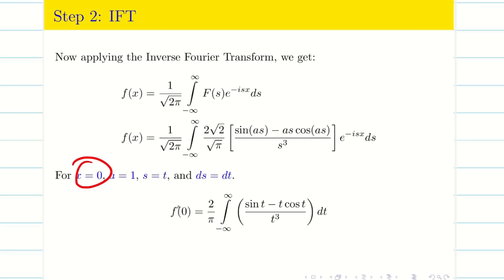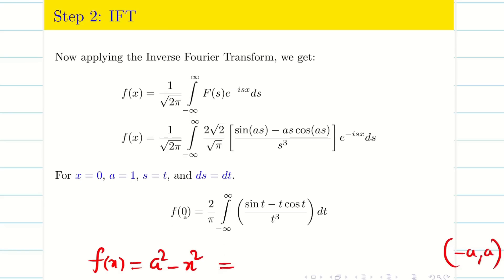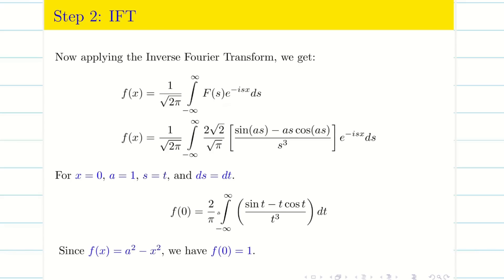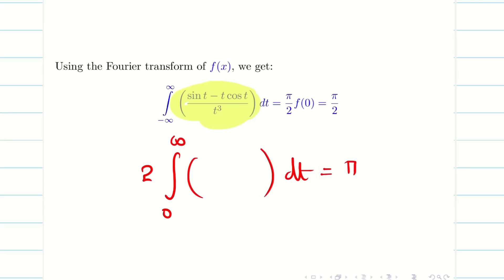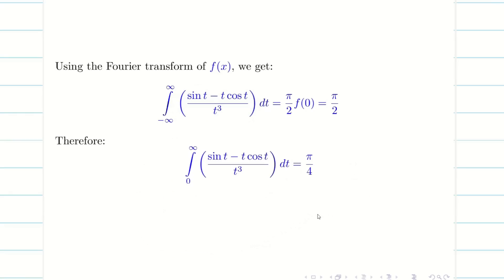With x = 0, the left-hand side becomes f(0). Since f(x) = a² - x² and a = 1, we have f(x) = 1 - x², so f(0) = 1. Substituting and moving 2/π to the other side gives (π/2)·f(0) = π/2. Using the even function property, we write 2 times the integral from 0 to ∞ equals π/2, and bringing the 2 across gives the final result π/4.